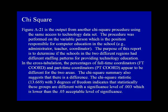Figure 8.21 is the output from another Chi-square procedure, using the same access to technology dataset. The procedure was performed on the variable 'person,' which is the position responsible for computer education in the school, such as an administrator, a teacher, or a coordinator. The purpose of this report is to determine if the schools in the two different regions had different staffing patterns for providing technology education.